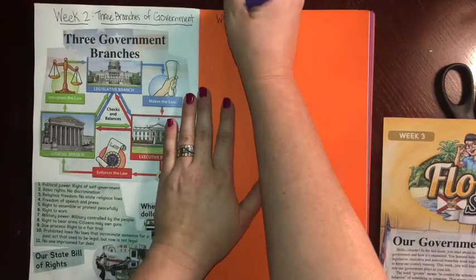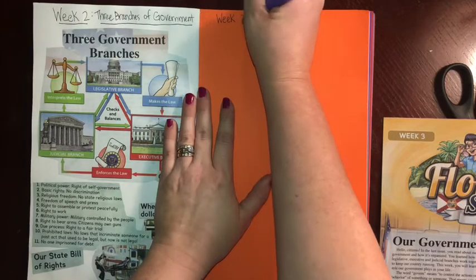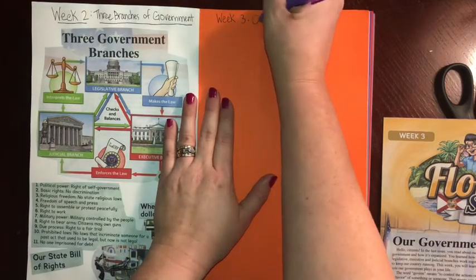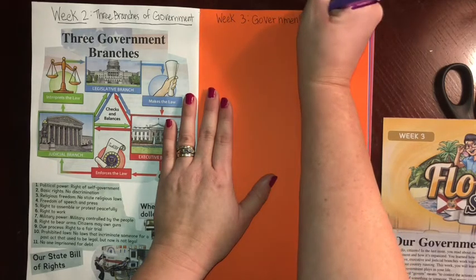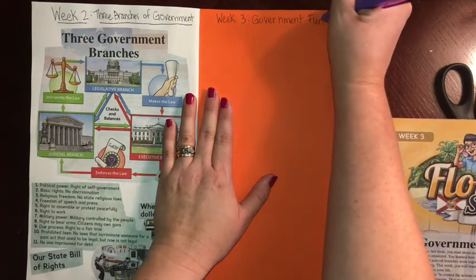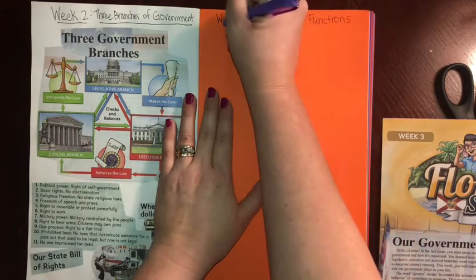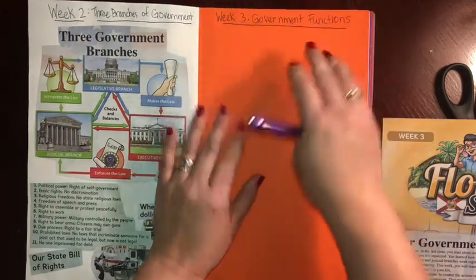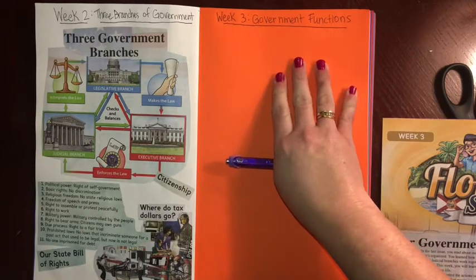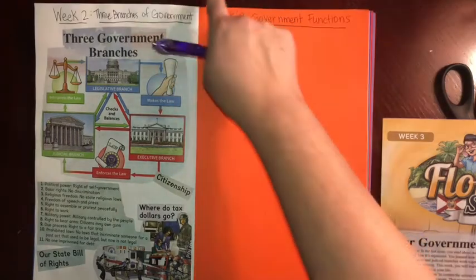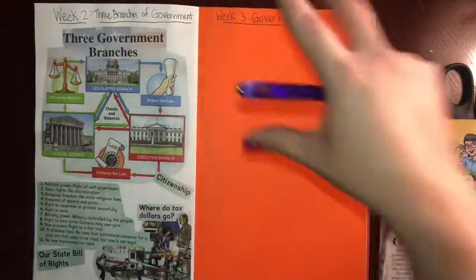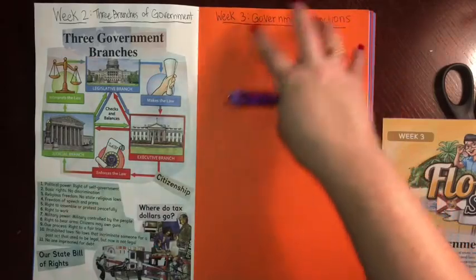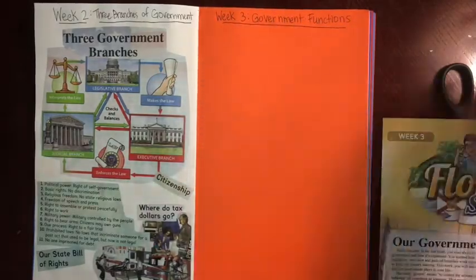The first thing we're going to start is by writing the next title of our scrapbook page. This is week three and this week we focused on government functions, so go ahead and write 'Government Functions' and then underline it. When you submit a picture today of your completed scrapbook page, please remember that you must show me the entire scrapbook page in your picture. Some of you have been taking zoomed-in pictures — I want to see the title and all of the pictures that you're inserting.